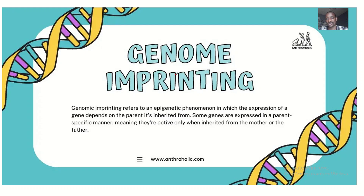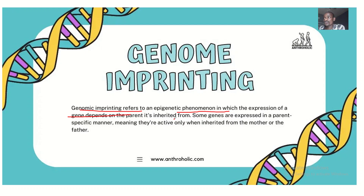Let's use this image to describe what genomic imprinting is. Genomic imprinting refers to an epigenetic phenomenon where the expression of a gene is dependent on the parent it is inherited from — whether you inherit it from your mother or father. Some genes are expressed in a parent-specific manner, meaning they are active only when inherited from the mother or from the father.